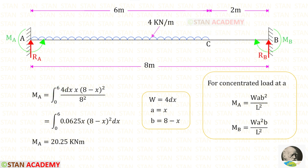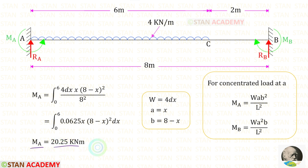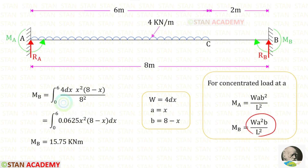Applying the values: W is 4 dx, A is x, B² is (8 − x)², and L² is 8². The factor 4 / 8² gives 0.0625. Using a calculator to perform the integration — if you don't know how to do integration on a calculator, see the link in the description below — for MA we get 20.25 kNm, and for MB we get 15.75 kNm. Both end moments have now been found.